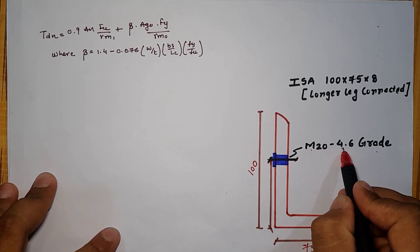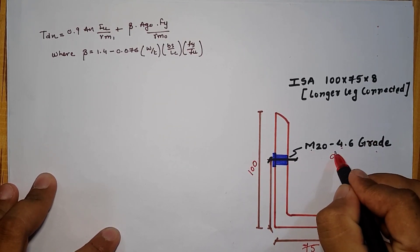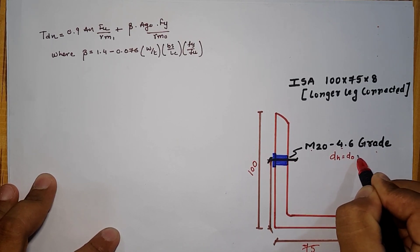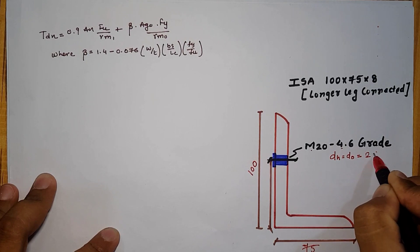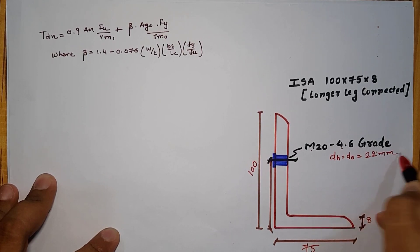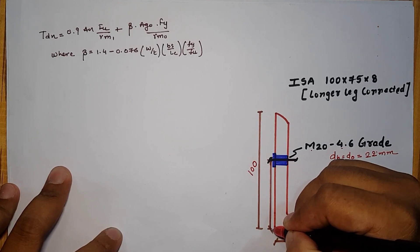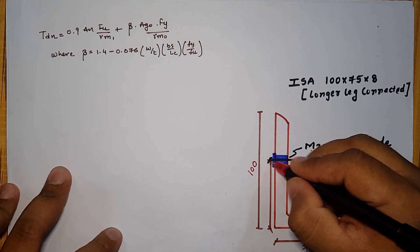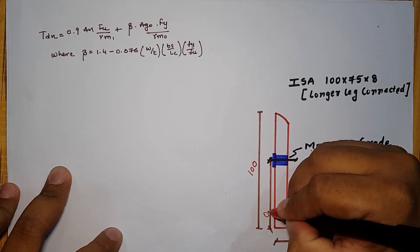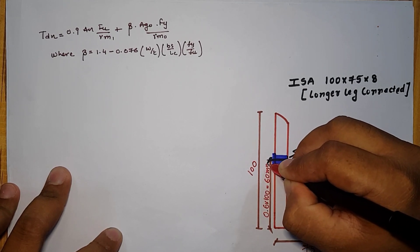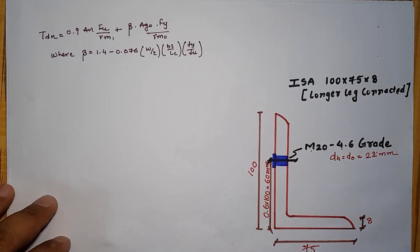We are given M20 4.6 grade bolt. It means that the diameter of hole which is indicated as DH or D0 is equal to 22 mm. And according to the notations, the distance between the outside leg to the center of the bolt is given as 60% of 100 which is equal to 60 mm.